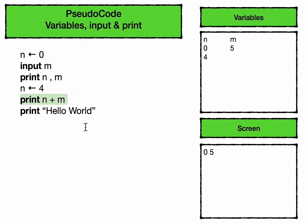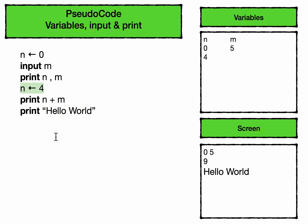Now when we get to the statement print n plus m, this time instead of getting five we're going to get nine because of the current values of n and m. This last statement will again print 'hello world'. If you change the value of n during the execution of the code then only the latest value is used.